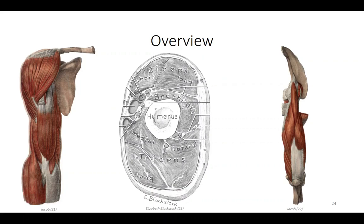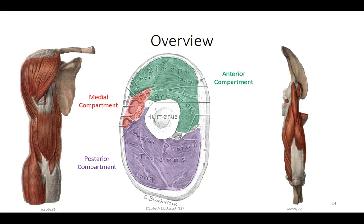In the arm, we can identify two specific muscular compartments: anterior and posterior. Muscles of the anterior compartment serve principally as flexors of the elbow, are innervated by the musculocutaneous nerve, and are supplied by branches of the brachial artery. Muscles of the posterior compartment are extensors of the elbow, innervated by the radial nerve, and supplied by the profunda brachial artery. Also note the presence of a medial neurovascular compartment, containing vital structures protected by the humerus and muscular compartments laterally, superiorly, and inferiorly, and the thoracic wall medially.